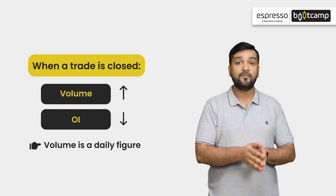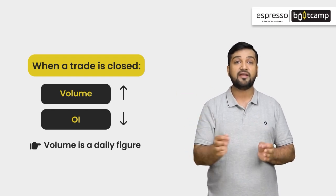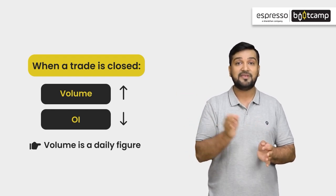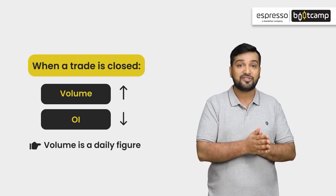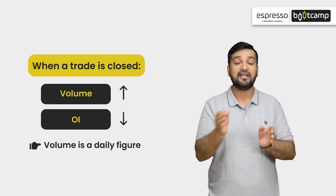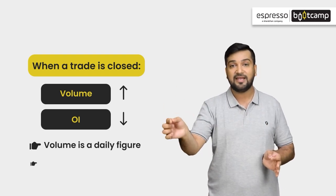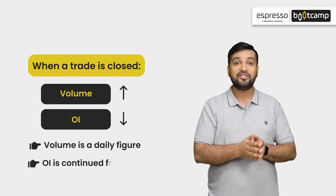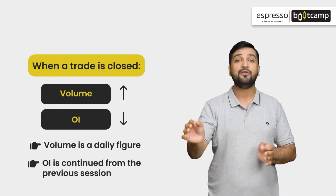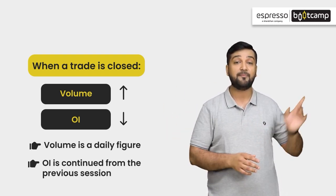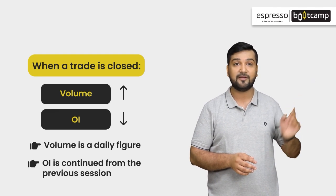Volume is a daily figure — it means that it resets to zero at the beginning of the session. On the other hand, OI is a continuation from the previous session.